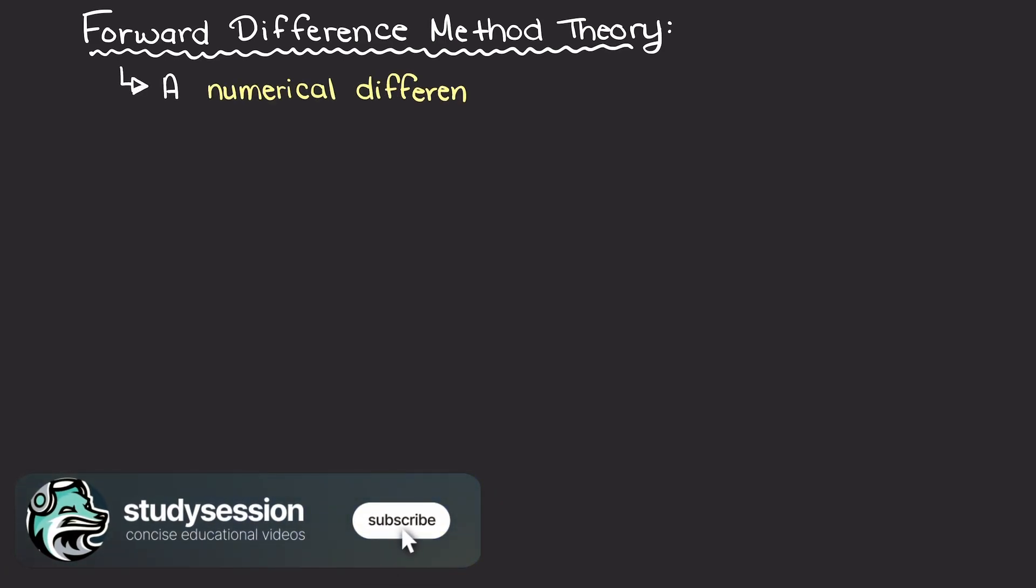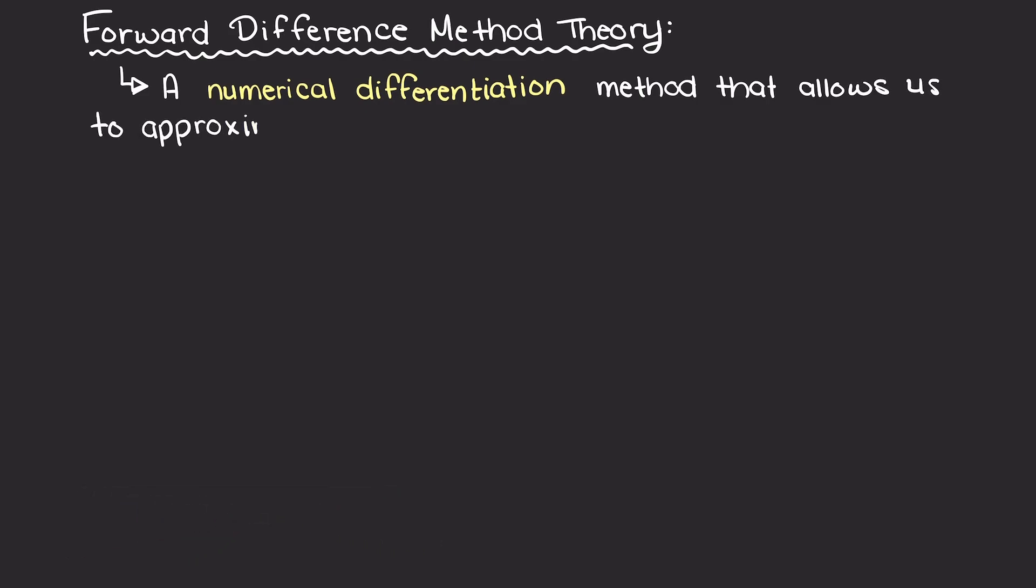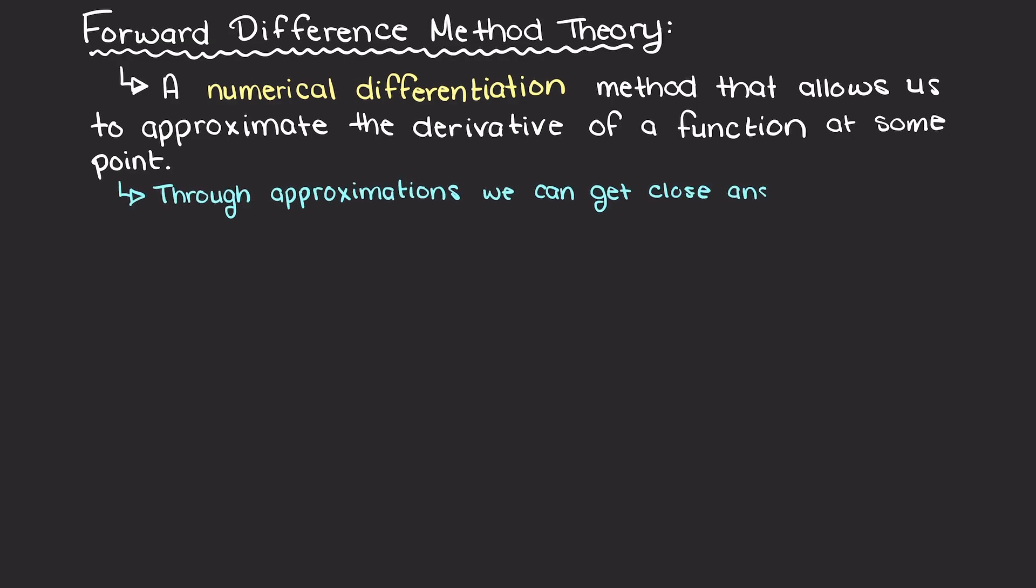Before we get into the theory of the forward difference method, let's quickly recap what numerical differentiation is. In numerical methods, differentiation involves approximating the derivative of a function at some point using numerical techniques rather than exact mathematical formulas. Through approximations we simplify a ton, and we can get very close to our actual answer with significantly less work. The forward difference method is one such technique that allows us to estimate the derivative of a function at a given point using numerical methods.